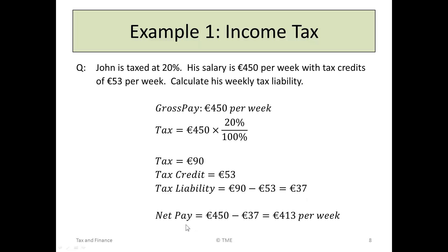His net pay is found by taking his gross pay of €450 minus the actual tax he has to pay when taking in all the various credits. So €450 minus €37 means John is earning €413 per week.